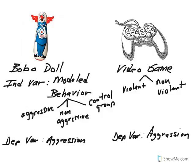The independent variable for the Bobo doll is the model behavior, and for the video game research it is type of video game. The dependent variable for both research scenarios is level of aggression demonstrated by the children. The hypothesis for the Bobo doll experiment is that model behavior will have an effect on aggression by the children who observe that behavior, and for the video games experiment the hypothesis is that violent video games will have an effect on aggression. Notice that the independent variables in both cases branch off into sub-categories, or what we refer to as levels or conditions of the independent variable.